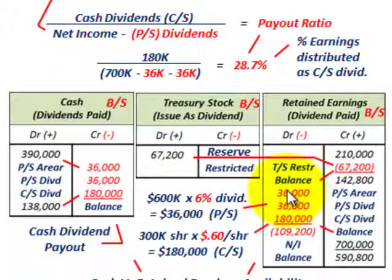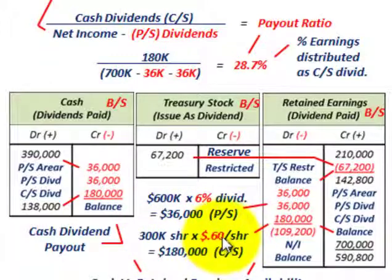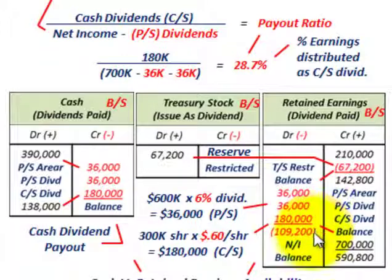For preferred stock: $600,000 times 6% equals $36,000. We debit retained earnings $36,000 for dividends in arrears and another $36,000 for the current year dividend. For common stock: 300,000 shares at $0.60 per share equals $180,000, reducing retained earnings by $180,000. This would create a deficit of $109,200 in retained earnings had we paid out the total common stock dividend at this point.